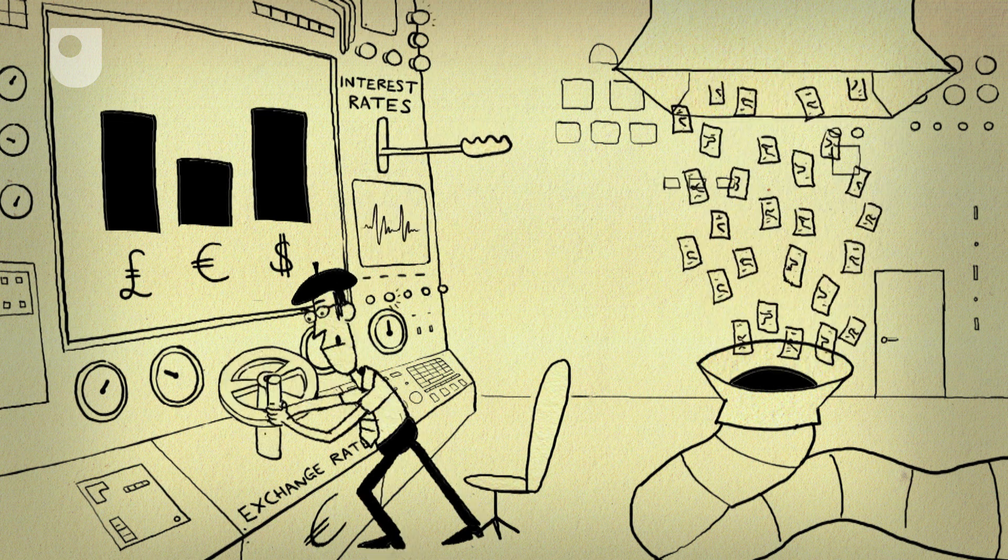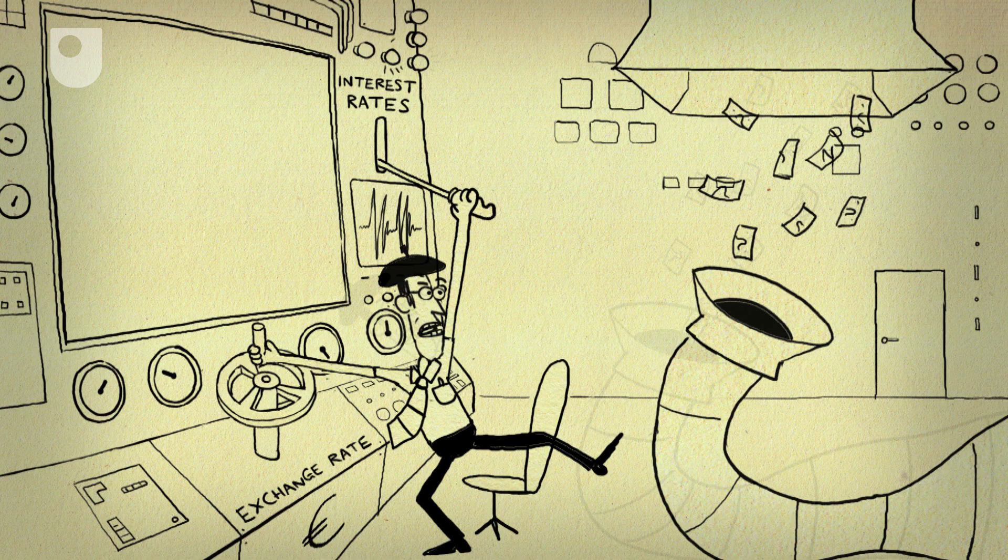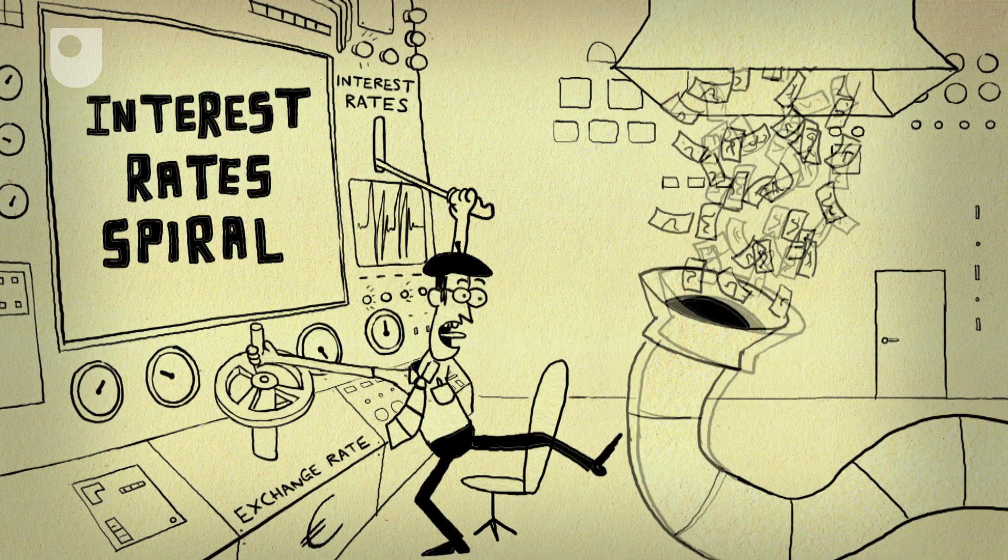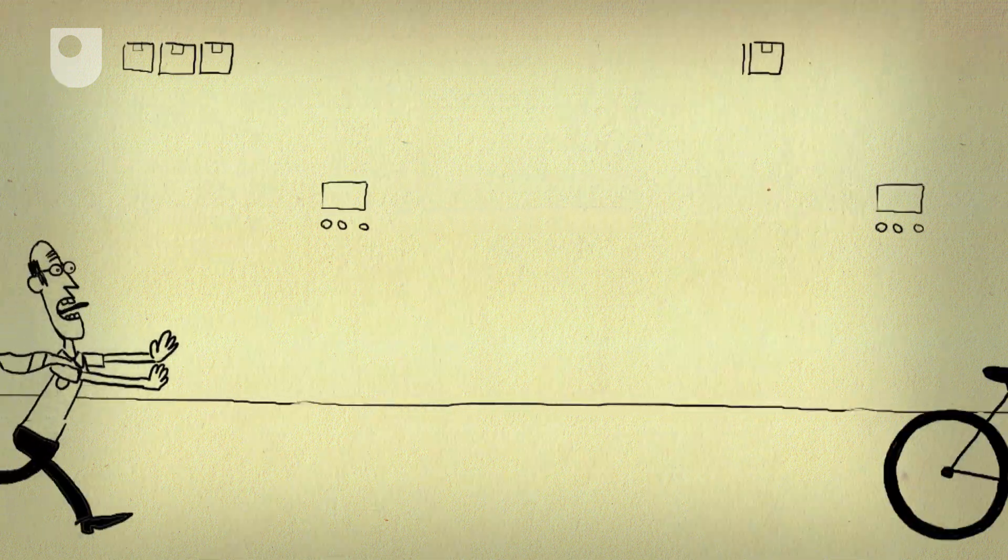You can either fix your exchange rate and let money flow freely across national borders, but have no control over your interest rates, or control your interest and exchange rates, but then you can't stop the capital flowing in and out. But like an overzealous triathlete, you can't do all three at once.